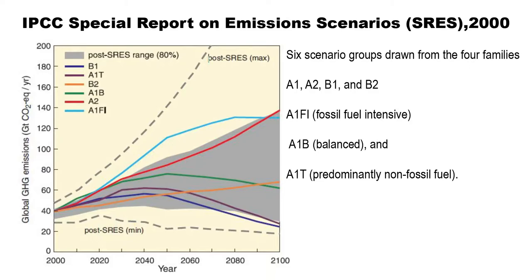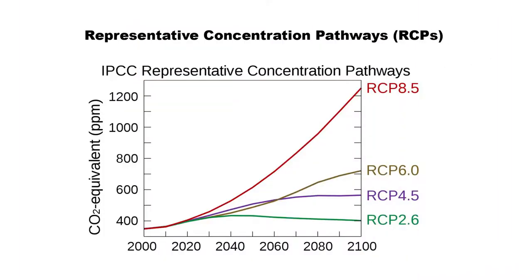The SRES provided common reference points for a great deal of climate science research in the last decade. In 2007, the IPCC responded to calls for improvements to the SRES and produced a new set of climate scenarios called the Representative Concentration Pathways, or the RCPs.